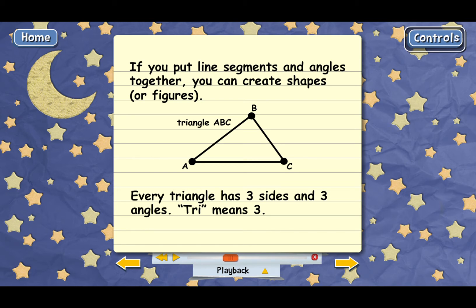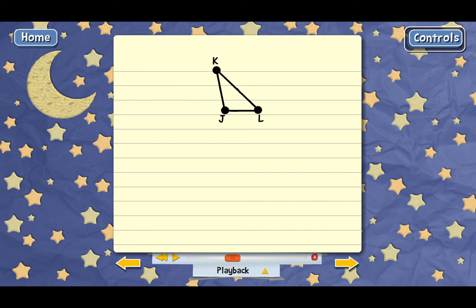Here's another triangle. Two of the sides are KJ and JL. What's the third side of this triangle? Good.